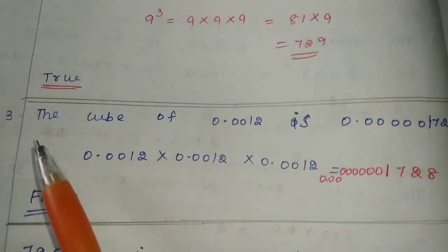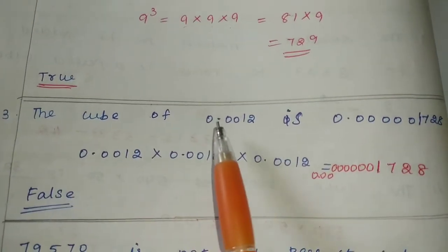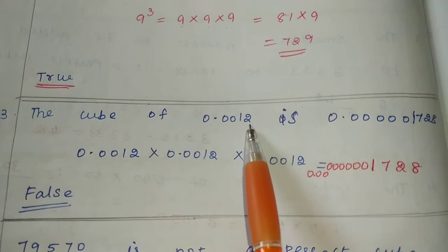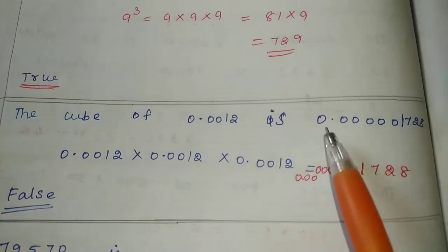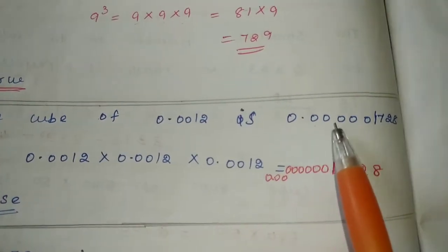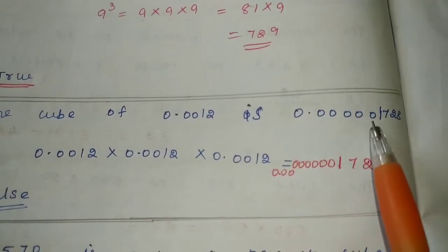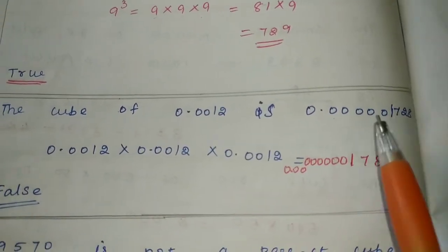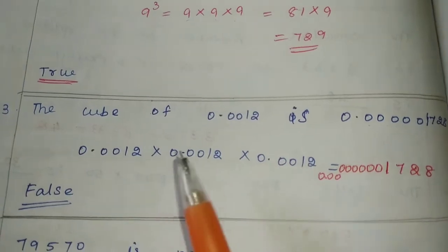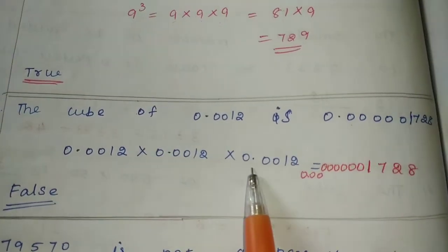The third one: the cube of 0.0012 is 0.000001728 — is this correct? If you say this directly you might get confused.